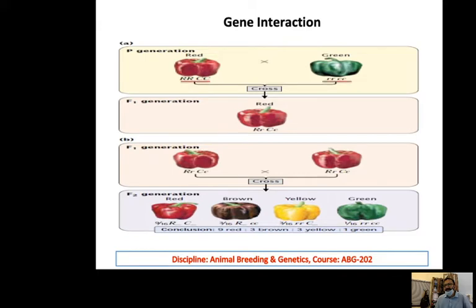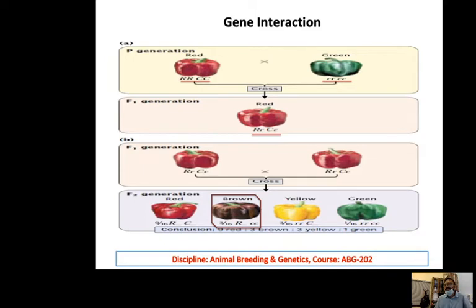We started with both genes fully dominant and heterozygous. In F2, 9 out of 16 are red, meaning both genes are dominant. The second phenotype occurs when the first gene is dominant and the second gene is recessive, giving the brown phenotype.